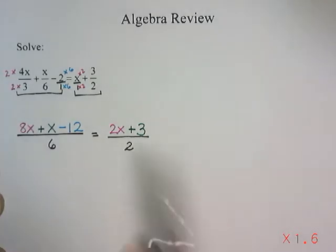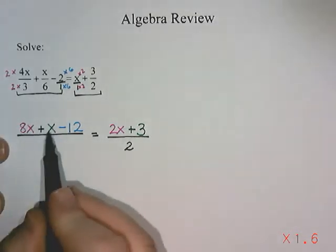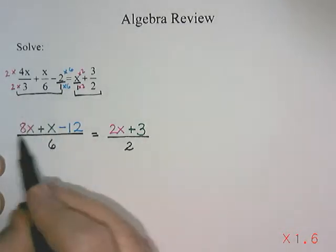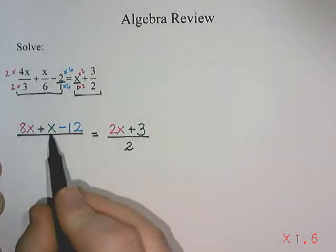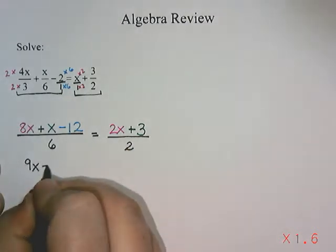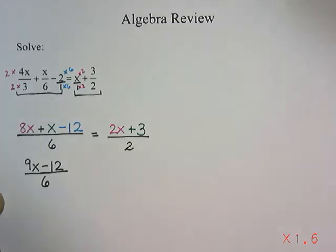So now that I have a common denominator, I'm going to collect any like terms that I might have. On this side, I have 8x plus x minus 12. These are both x terms, so I can add those together because they have the same variable. So 8x plus x gives me 9x. And then that take away 12 does not have an x, so they're not like terms and I can't add it with the 9.